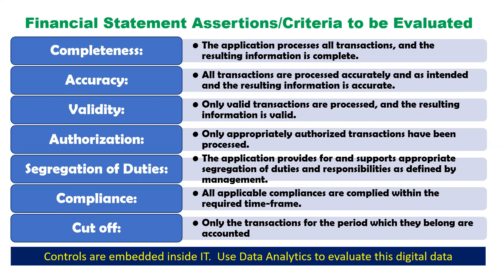You also need to look at the segregation of duties and authorization. Every organization has segregation of duties wherein every employee, depending on their role and responsibilities, is empowered with certain powers of authorization. It's important to check whether within the information systems these authorizations have been properly built in. For example, if a branch manager has the power to sanction loans up to two lakh rupees, you need to check whether the loans sanctioned are within that authorized power.